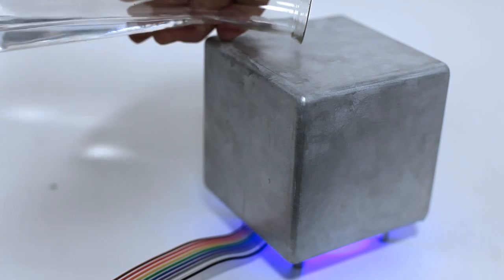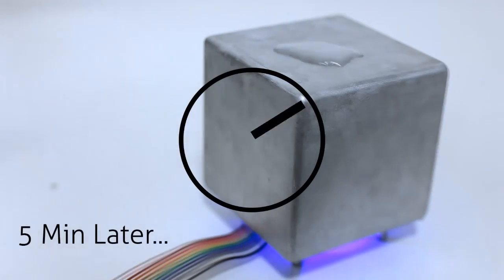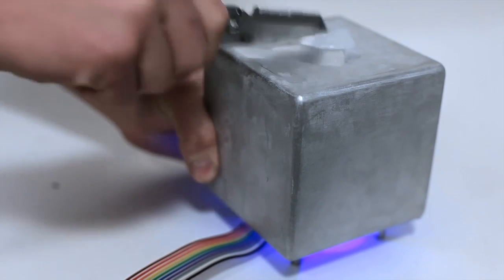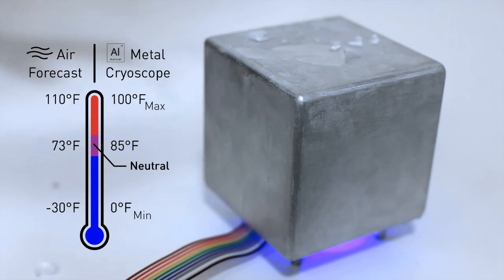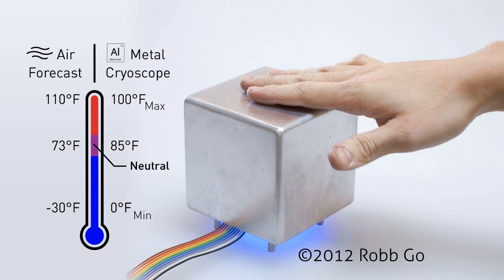The device has a range of 0 to 100 degrees Fahrenheit. The temperature is adjusted for humidity, windchill, and the properties of the metal, so it can truly represent how it will feel outside.